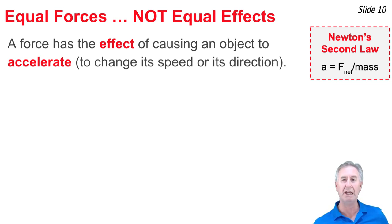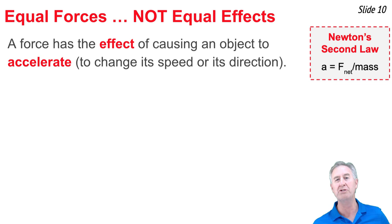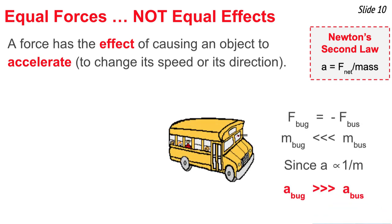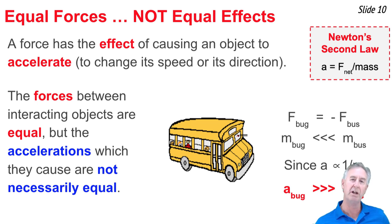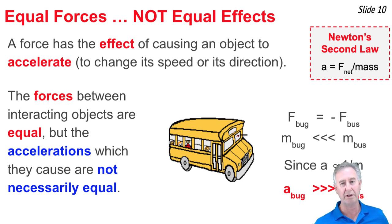Newton's Third Law states that the forces are equal, but Newton's Second Law states that the acceleration caused by a force depends both on the force and on the mass. So the force on the bug equals the force on the bus, just in opposite directions. But the mass of the bug is much less than the mass of the bus. Since acceleration depends inversely upon mass, the acceleration of the bug is much greater than the acceleration of the bus. While the forces on the individual objects are equal in magnitude, according to Newton's Second Law the accelerations depend upon mass and are not necessarily equal.